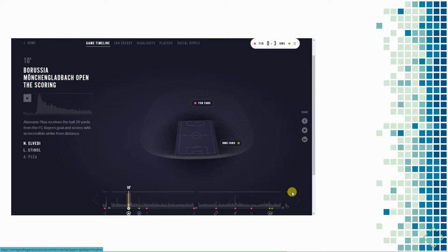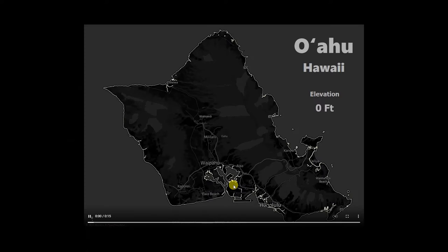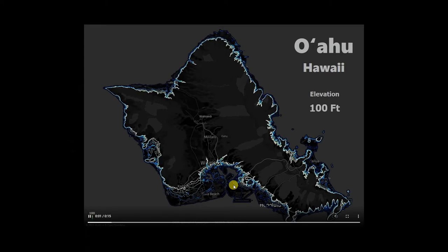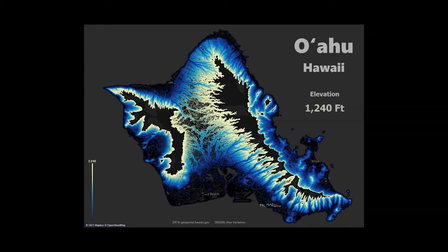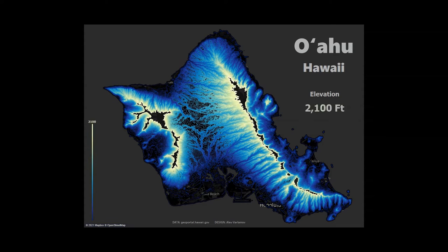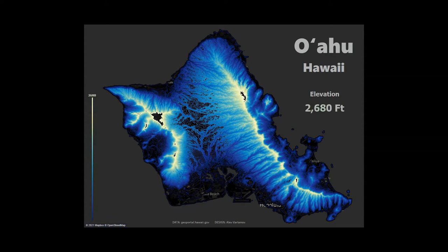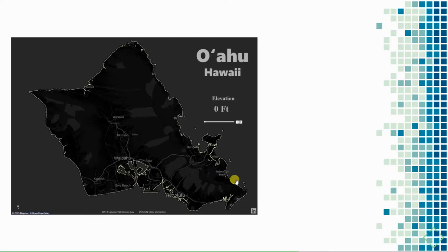Next, I really like how simple this visualization with contour lines by Alexander Varlamov is — it animates through the height of a mountain in Hawaii and it's quite pretty. The more interesting thing is this was put together with Tableau, and I know a lot of people on the non-profit and government side use Tableau. This is an example of how you can make beautiful things with it.